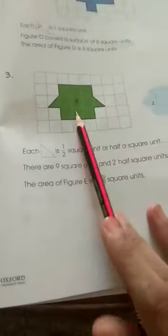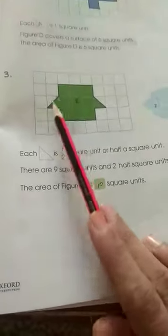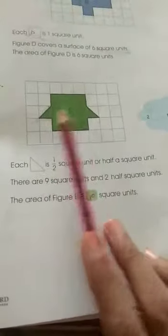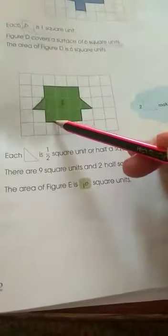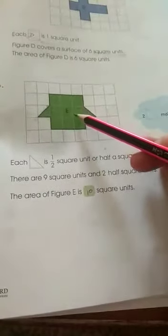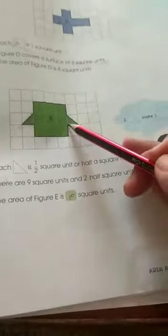Now, come to the second example. Here they are showing you the half. Half means, when you are counting half and half, it will become 1 square unit. So, that is why they are showing you. Now, again you will count it. 1, 2, 3, 4, 5, 6, 7, 8, 9. And 2 halves means, this half and this half make 1.